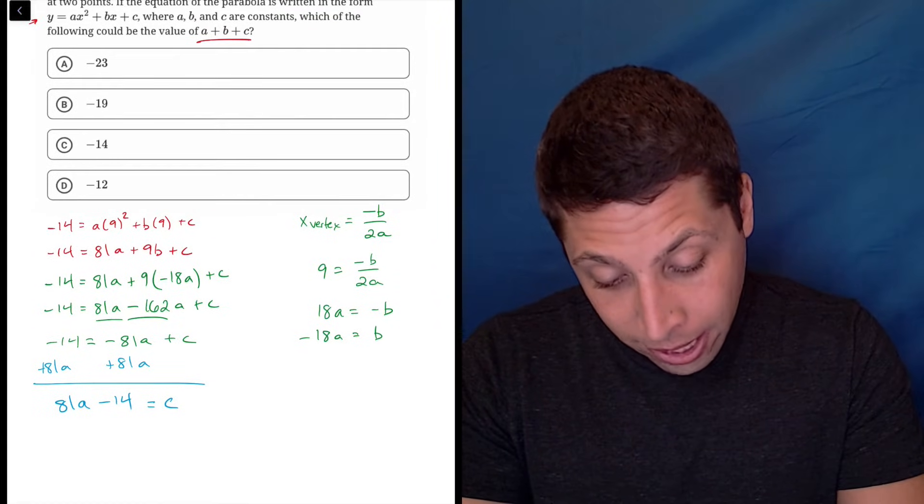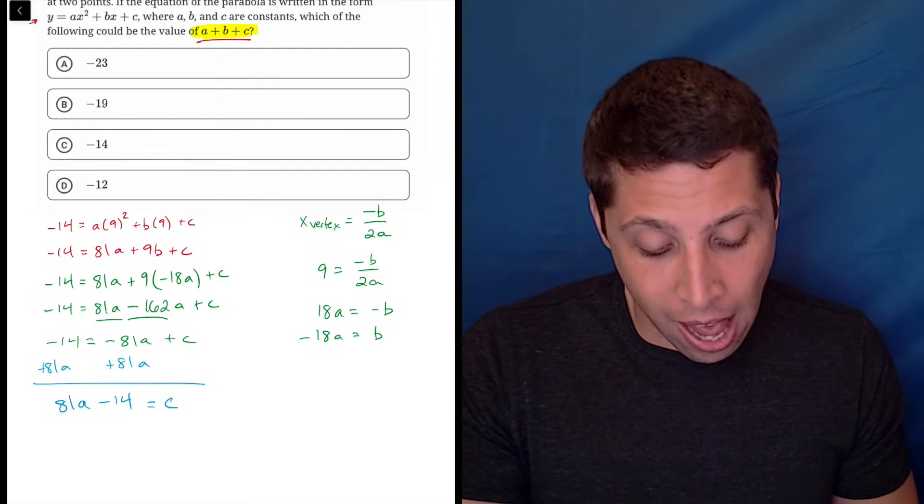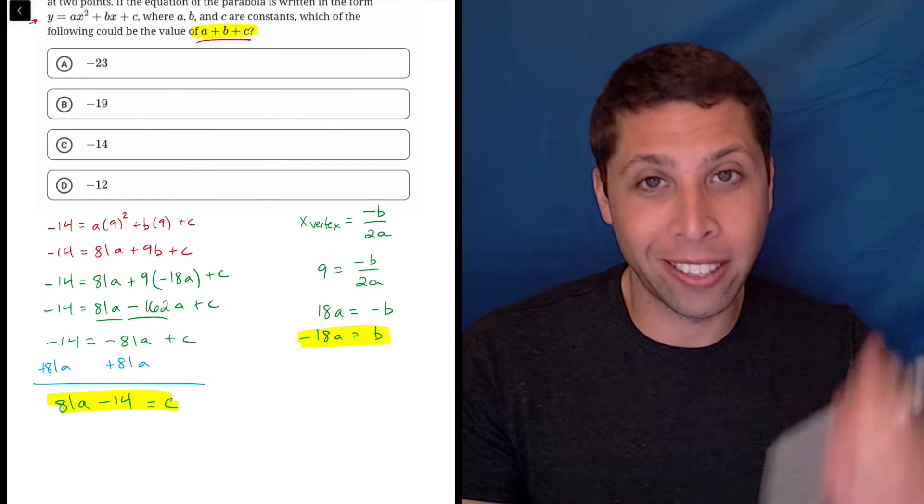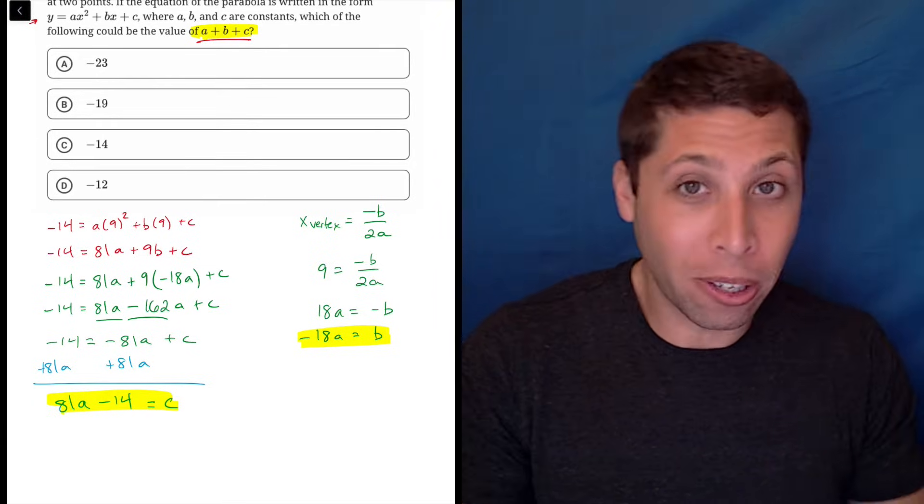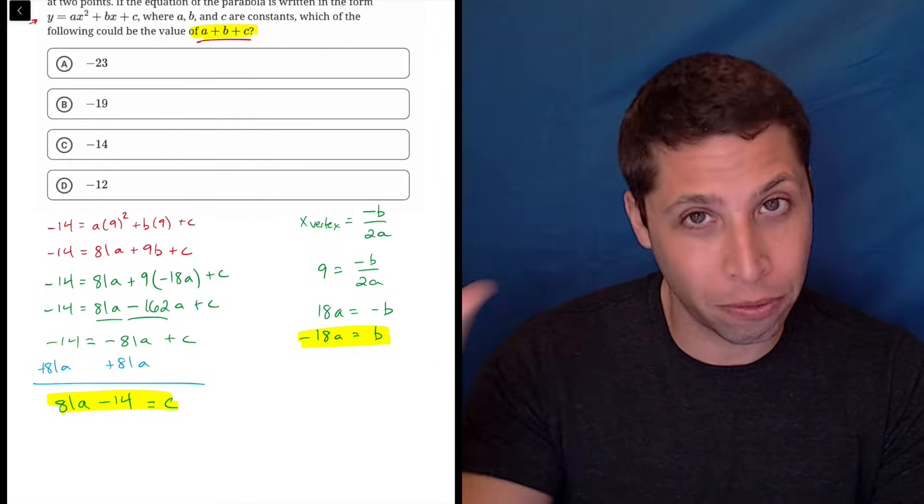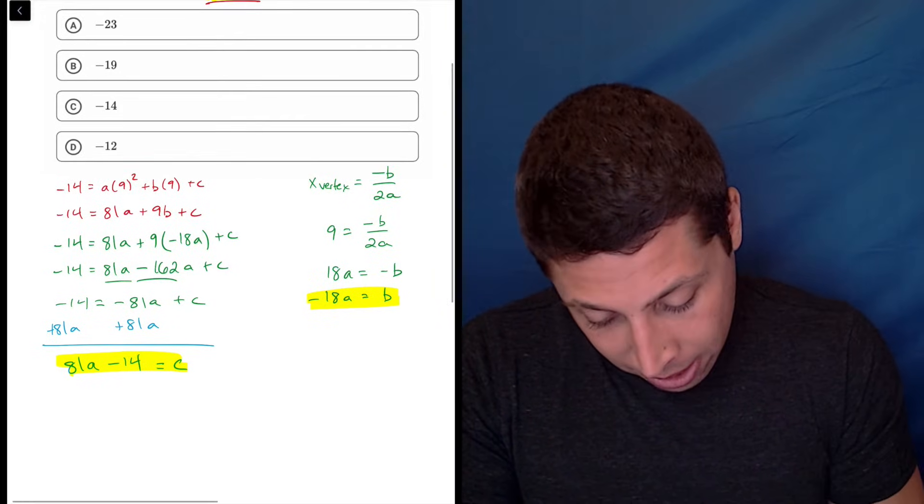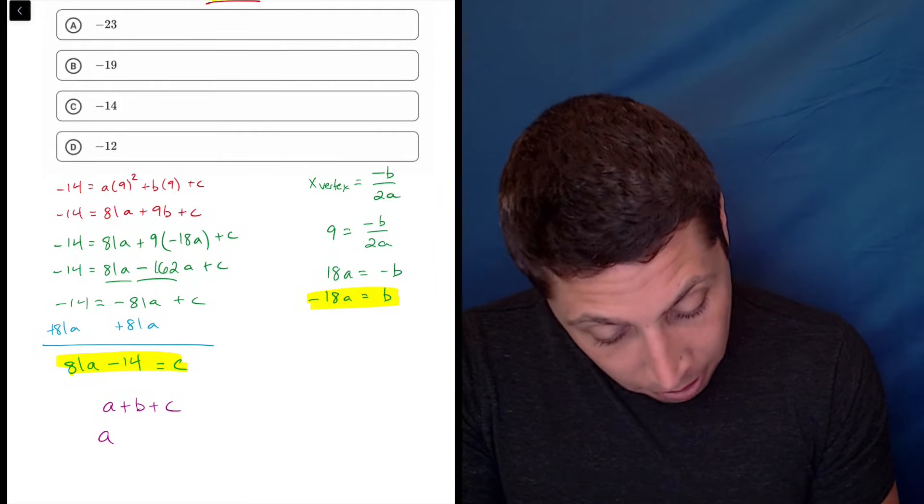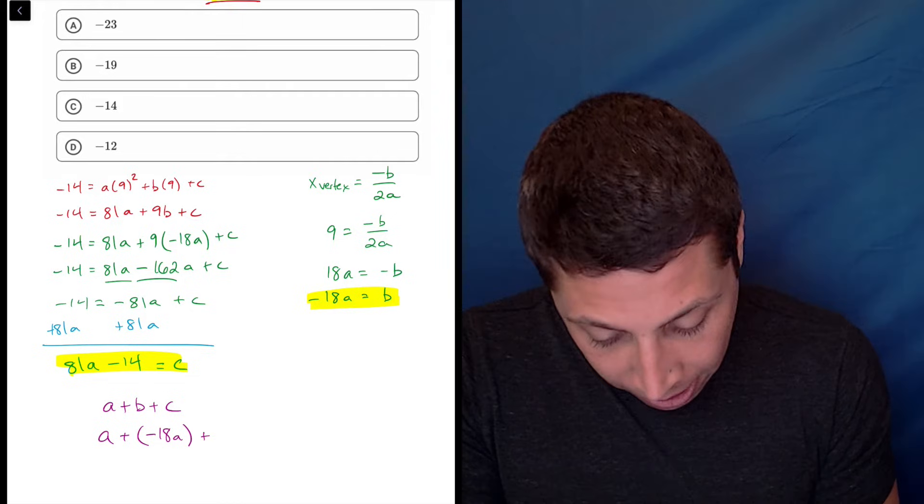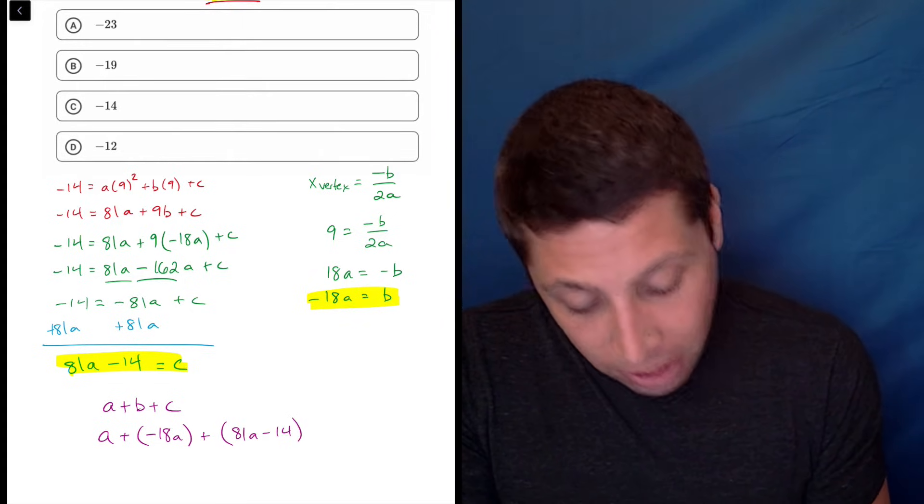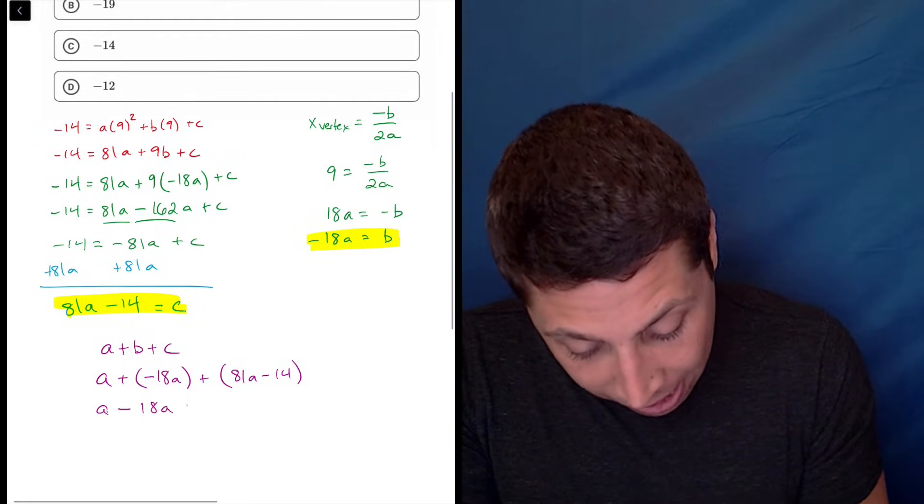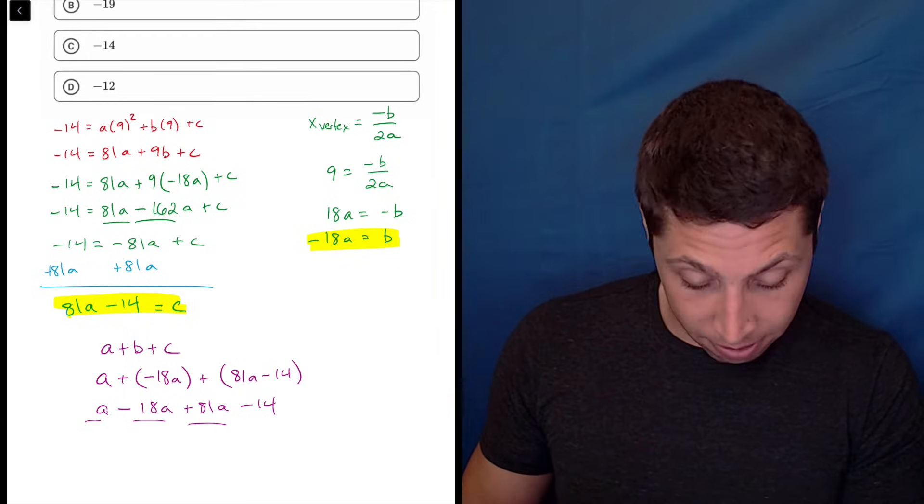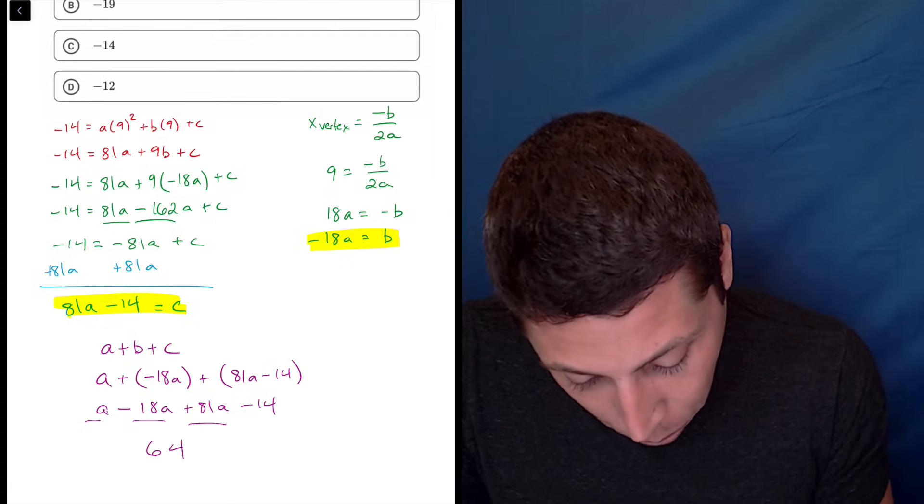I'm going to add this 81A to both sides so that I end up with C equals 81A minus 14. It's not pretty, but at least it's only got the one variable. Now thinking about what I wanted, A plus B plus C, I have a value of B that's in terms of A. I have a value of C that's in terms of A. Maybe I can turn that entire A plus B plus C into just a bunch of A's and then something will click because that's just one variable. One is better than three. And with any sort of algebra, the fewer variables you have, the better. So let's just see. I'm going to add A plus B plus C. So A is just A. B is going to be, I'll put in parentheses, negative 18A and C is 81A minus 14. So let's clean this up. A minus 18A plus 81A minus 14. We can combine like terms. So 1 minus 18 plus 81 is 64A minus 14.